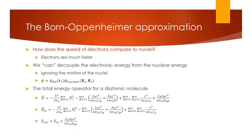The total energy for a diatomic molecule can be described as follows. We have a first term for the kinetic energy of the electrons, a second term for the attraction between the electrons and nucleus A and nucleus B, a third term for the repulsion between all electrons (electron 1 with electrons 2 through N, and so on), and finally a term for the repulsion between the nuclei.